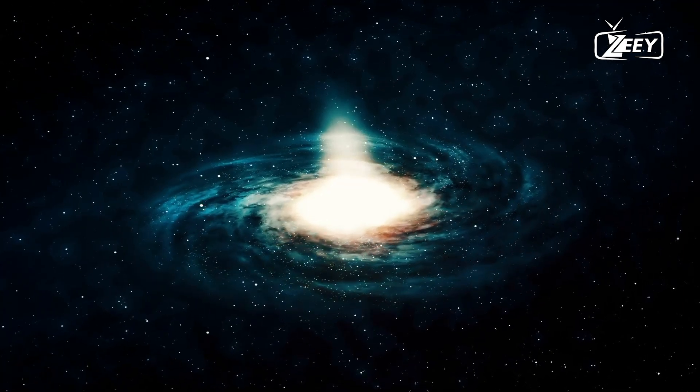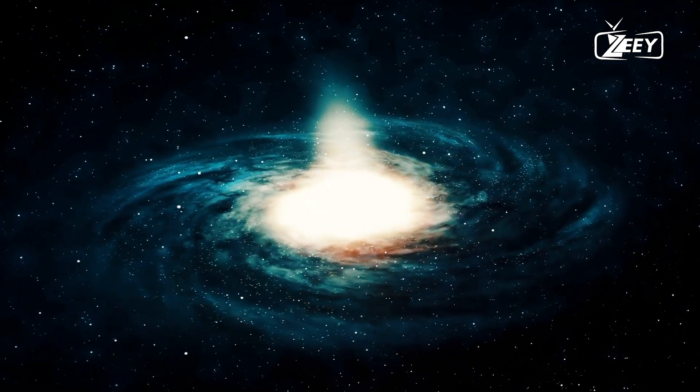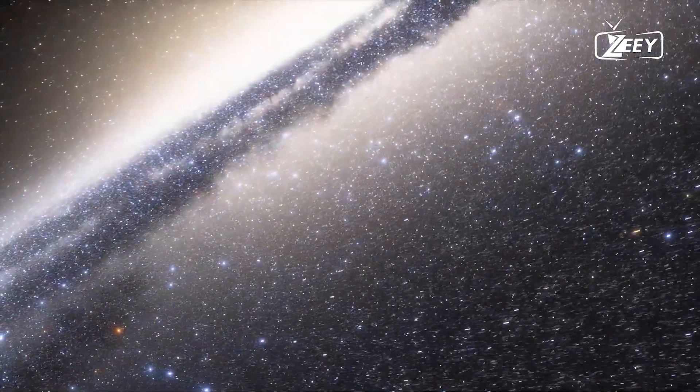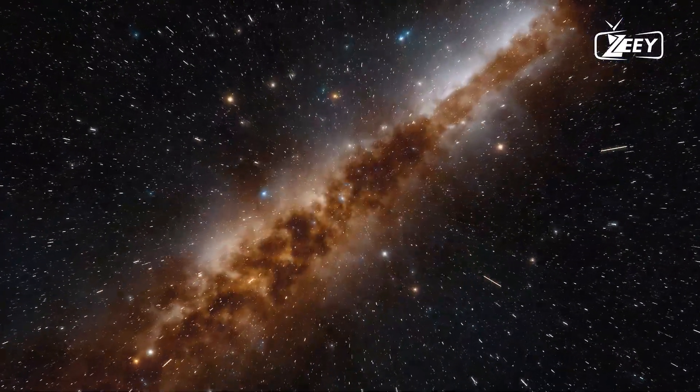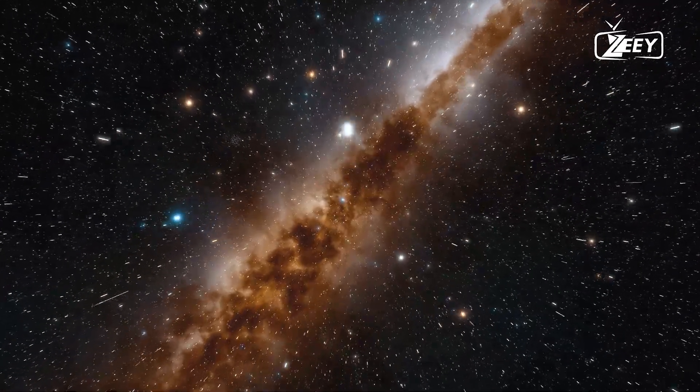This band-like formation suggests that we inhabit a flattened disk rather than a spherical structure. If our galaxy were spherical, stars would be evenly scattered across the sky. The band bisecting the night sky indicates that we exist within its plane, neither above nor below it.